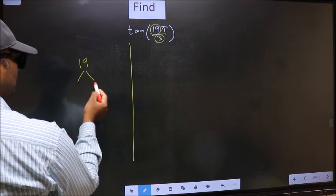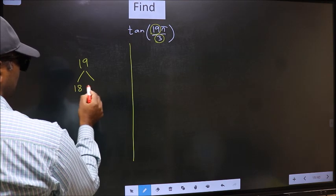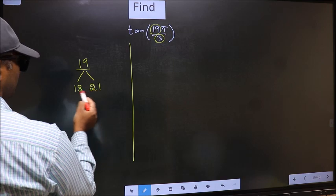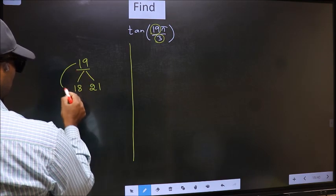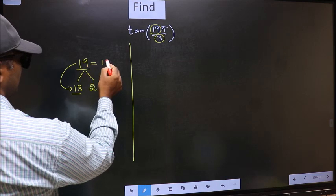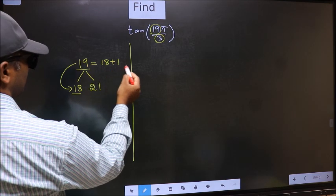Here you write multiples of 3: 18 and 21. 19 is close to which number? It's close to 18. So 19 should be written as 18 plus 1.